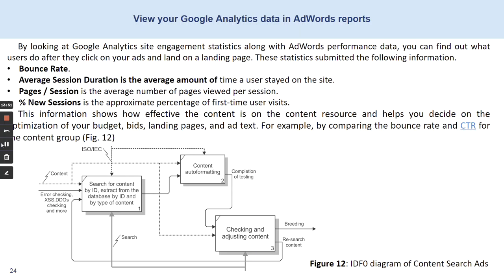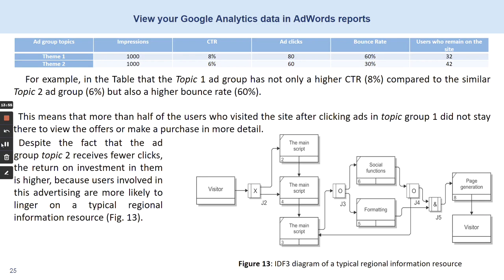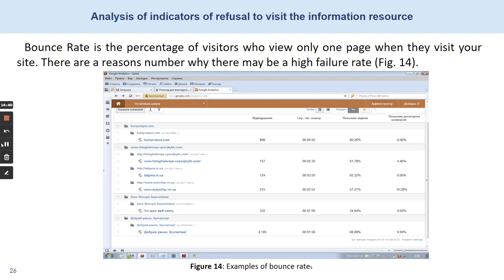In this slide you can see a diagram of content search ads. For example, in the table, the topic one ad group has not only a higher CTR compared to the similar topic two ad group, but also a higher bounce rate. This means that more than half of users who visited the site after clicking ads in topic group one did not stay to view offers and make a purchase. Despite fewer clicks, the return on investment for topic two is higher because users are more likely to linger on a typical regional information resource. In this slide you can see examples of bounce rates.